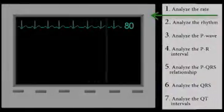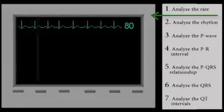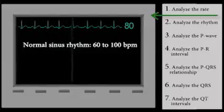Step 1. Analyze the rate. Normal sinus rhythm produces a heart rate of 60 to 100 beats per minute.